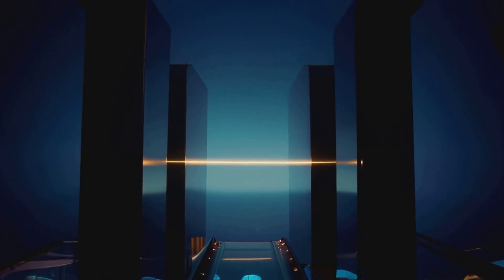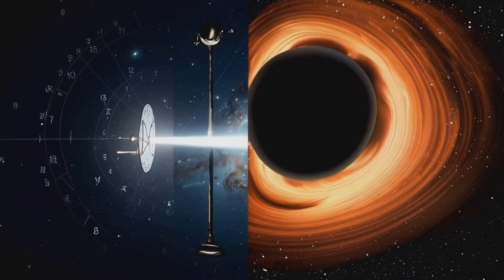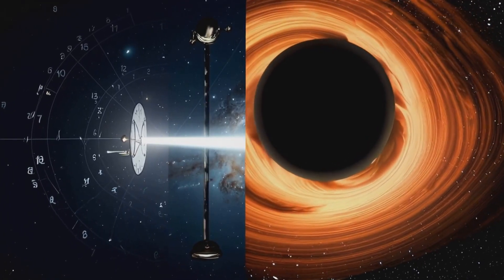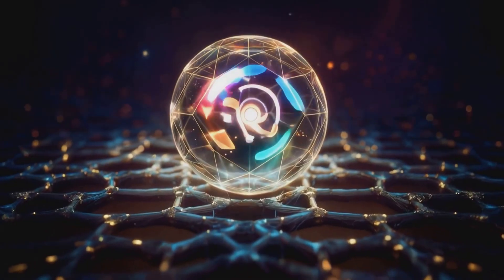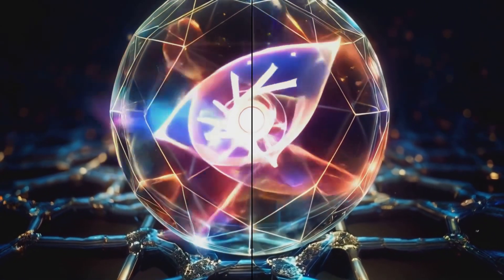When a measurement occurs, a single possibility is selected from the state vector, collapsing the wave function and bringing that specific outcome into our reality. This process, happening countless times every second, shapes the universe as we experience it.